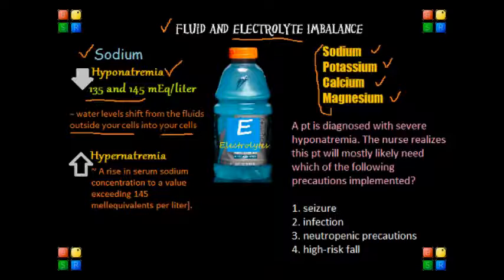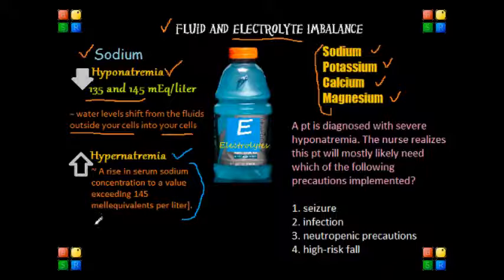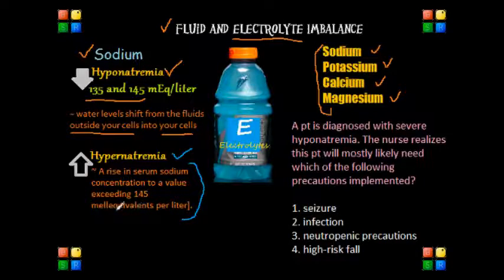Now let's talk about the opposite effect, which is hypernatremia. With hypernatremia, it's defined in the NCLEX as a rise in the serum sodium concentration — a value exceeding 145 milliequivalents per liter. Generally, these patients are more often elderly people who are mentally or somewhat physically impaired. Hypernatremia is usually caused by an impaired thirst mechanism and not drinking enough water. The development of hyperosmolality from water loss can lead to neural cell shrinkage and eventually brain injury.